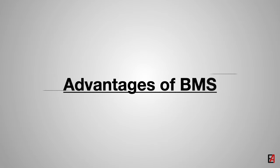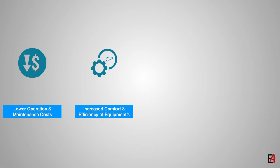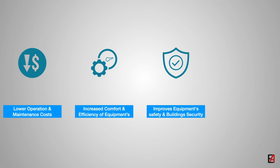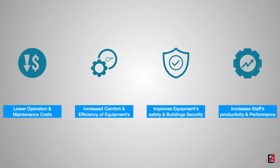BMS has many advantages. The first is lower operation and maintenance cost. With automated functionality, BMS provides lower operational maintenance cost to the building owner. Next is increased comfort and efficiency of equipment. With the ability to fine-tune the system, BMS increases comfort to building occupants and also increases the efficiency of the equipment. It also improves building security and equipment safety. With the ability to alert immediately in case of any abnormalities, BMS improves equipment safety and building security. With its ability to transfer data to a maintenance management system, BMS increases productivity and performance.